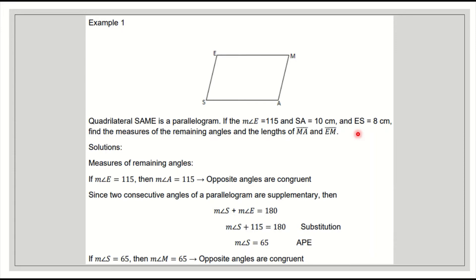For the solution, we have here measure of angle E is 115. So lagyan natin 115 degrees. The measure of angle A is also 115. Why? Because opposite angles are congruent. Therefore, if angle E is 115, then angle A is also 115 degrees.